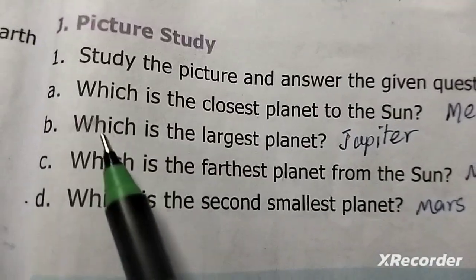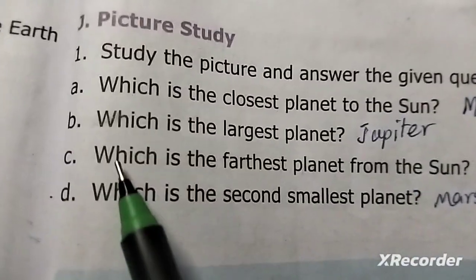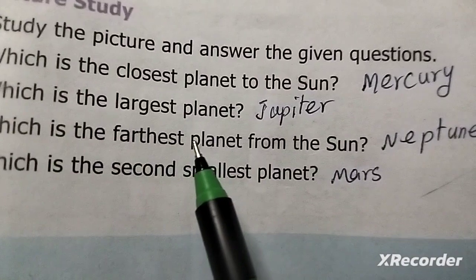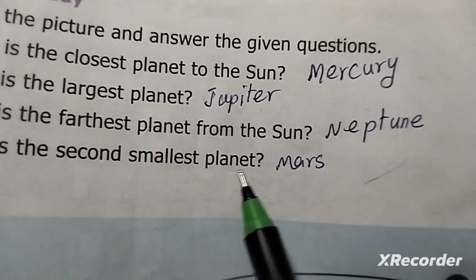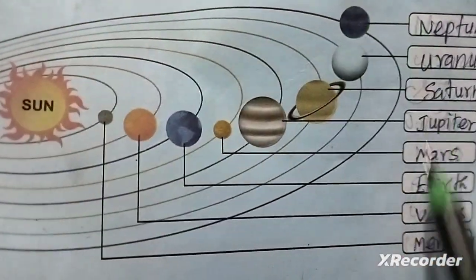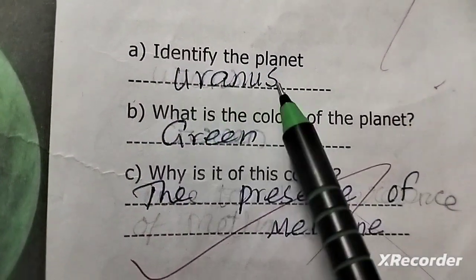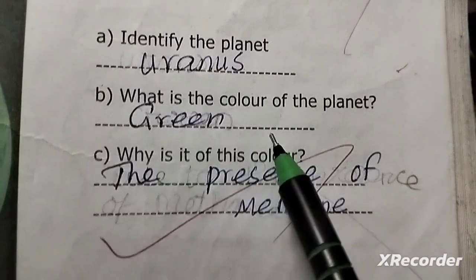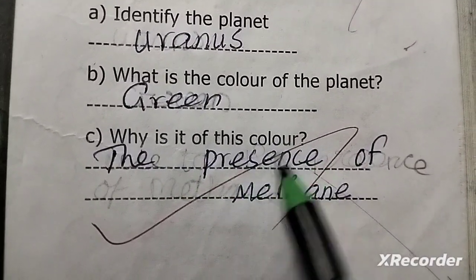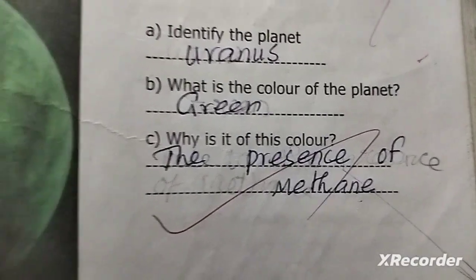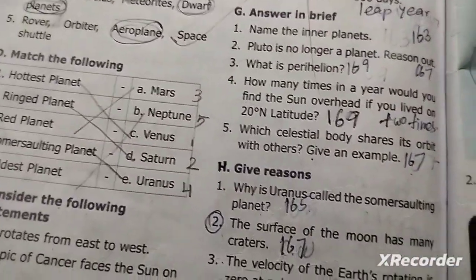Look at the picture and answer the given questions. Which is the closest planet to the Sun? Mercury. Which is the largest planet? Jupiter. Which is the furthest planet from the Sun? Neptune. Which is the second smallest planet? Mars. Order: Mercury, Venus, Earth, Mars, Jupiter, Saturn, Uranus, Neptune. What is the color of the planet? Green. Why? Because of the presence of methane. Okay students, thank you.